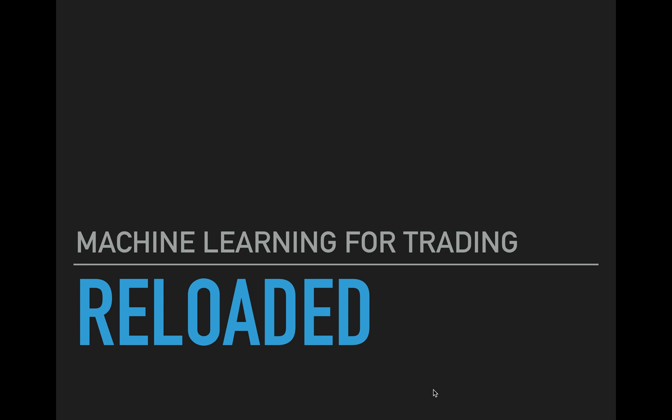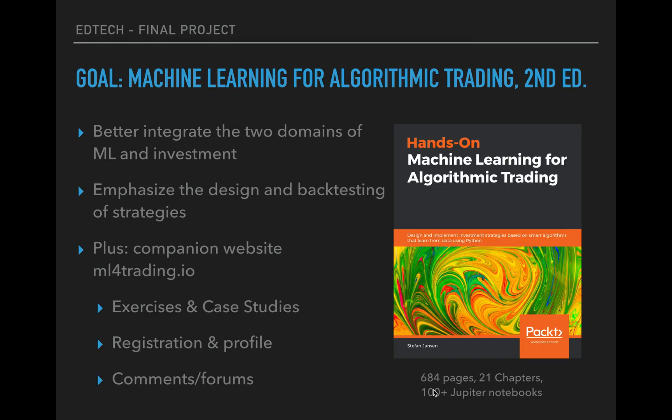I would like to tell you a little bit about my final project called Machine Learning for Trading Reloaded, because it is about the second edition of my book 'Hands-On Machine Learning for Algorithmic Trading' that I published about a year ago. It has almost 700 pages, 21 chapters, and a lot of Jupyter notebooks that illustrate how you can use machine learning for trading strategies.